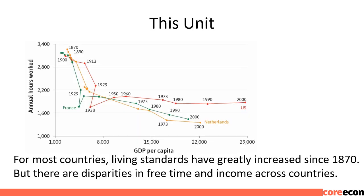The graph shows data for three countries: the US, France, and the Netherlands. Annual hours worked are shown on the vertical axis and living standards as measured by GDP per capita on the horizontal axis. In the 1870s to 1900, GDP per capita is around 1500 and number of hours worked is about 3000 per year. It is clear that living standards have greatly increased since 1870 in each of the three countries, but there are disparities in free time and income across countries.